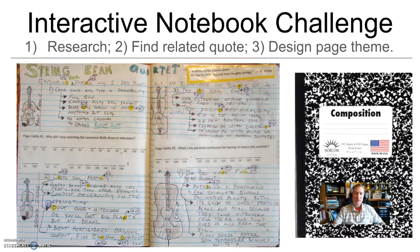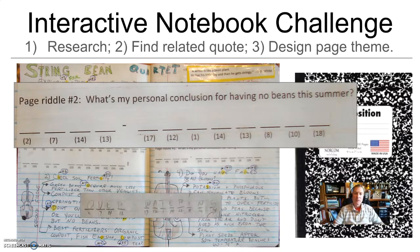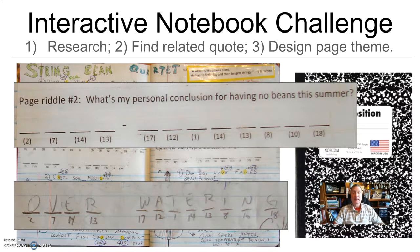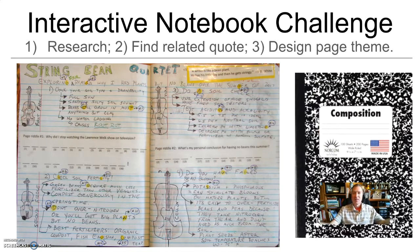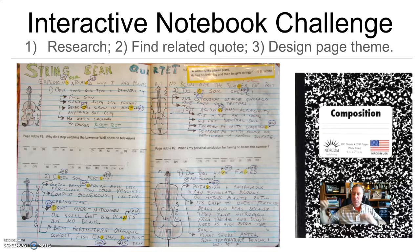On the right-hand side there's a Riddle 2 — probably the more important riddle: what's my personal conclusion for having no beans this summer? If you solve my riddle, you'll figure out that I think my biggest problem this summer was overwatering. All the information I learned pointed to that — if water pools up, that's bad for beans, and that was happening with my soil this summer. And so there you have it: idea to draft to final page. I now have a page in my interactive notebook that celebrates something in a way I wanted to learn it, along with my personal reactions.